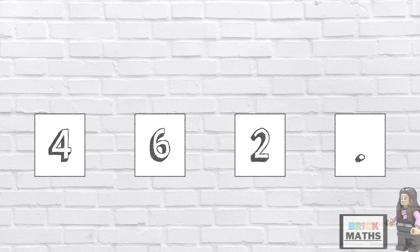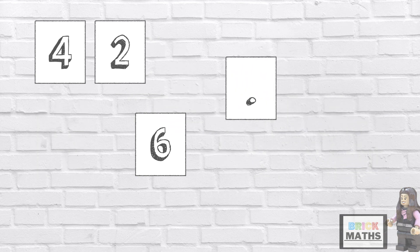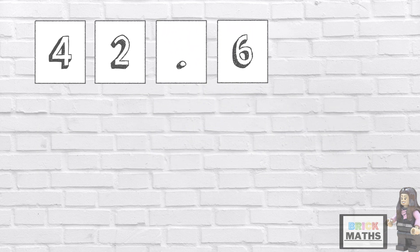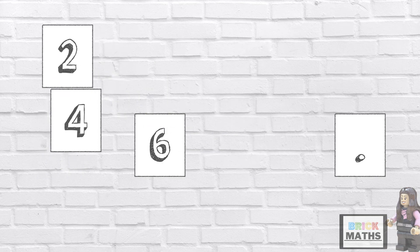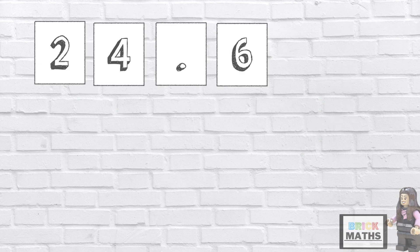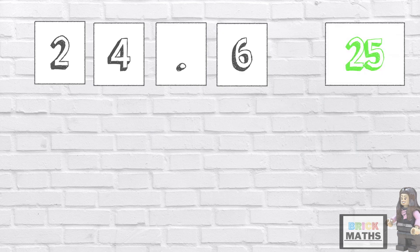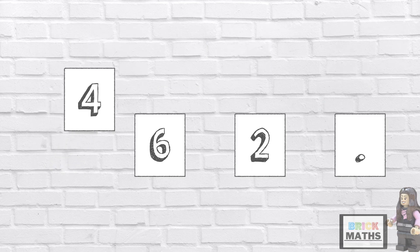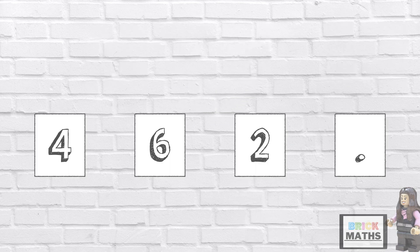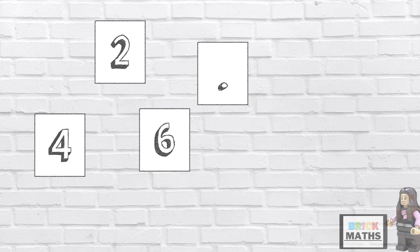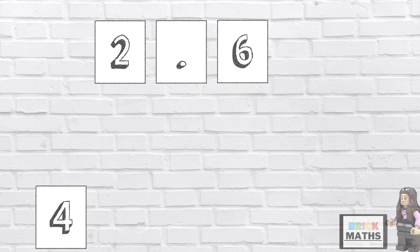How did you get on? There are 4 different decimal numbers you could make from these digits that could round up to the next whole number. You could have made 42.6, which would round up to 43. You could have made 24.6, which would round up to 25. You could have made 4.6, which would round up to 5. And finally, you could have made 2.6, which would round up to 3.